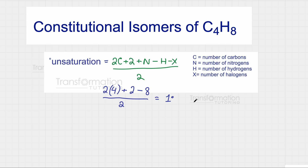One degree of unsaturation means that my molecule has to have either a double bond or a ring. I'll keep that in mind as I'm drawing, and you can always check how many carbons and hydrogens you have to make sure you're drawing the correct molecule.